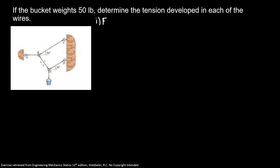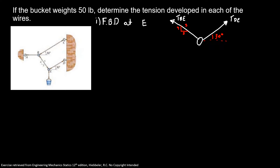So first, I'm going to start with the free body diagram at ring E. Here, I have my tension DE, with a 30 degree angle as the image shows us. Here, I have my tension BE with the 3-4-5 triangle. And here, I have the weight of the bucket.